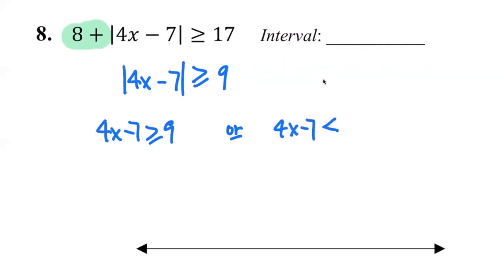Okay, so it's 16. You add seven on both sides, you get 16 on the right, you divide it by four. You divide by a positive number, you don't flip the sign, so you have x is greater than or equal to four. And then over here you add seven on both sides, you get negative two on the right.